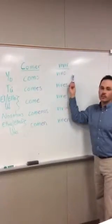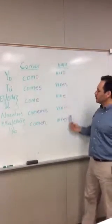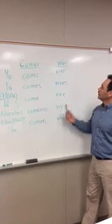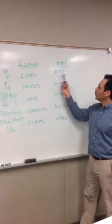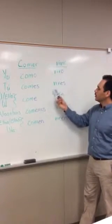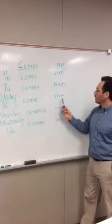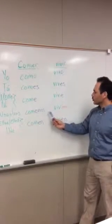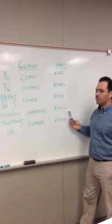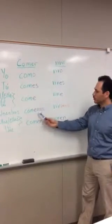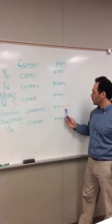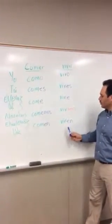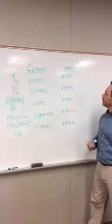The endings for IR verbs are very similar except nosotros. So for example, vivir would be: yo vivo, tú vives, él or ella vive, usted vive, but nosotros vivimos. That's the only one that changes from -emos to -imos, and then ellos and ellas viven, or ustedes viven.